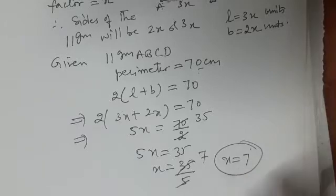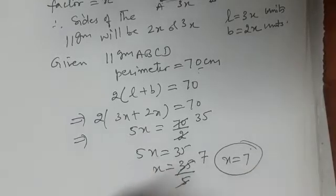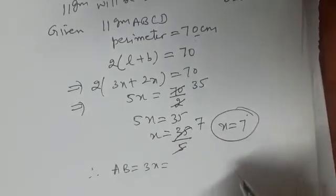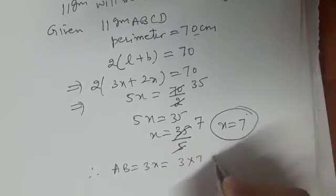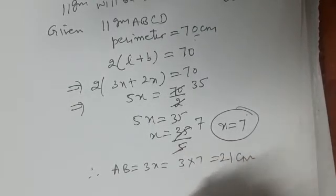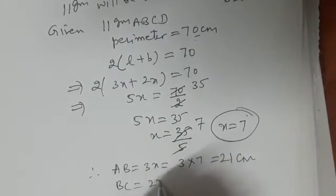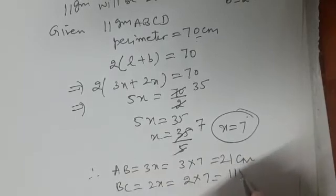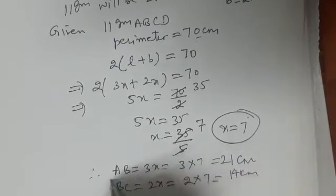What will be the sides of the parallelogram? We assumed AB equals 3x, so this will be 3 times 7, that is 21 centimeters. And BC is 2x, so 2 times 7, that is 14 centimeters. These are the lengths of the sides of the parallelogram.